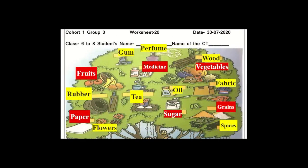Let's check them. Starting with the left side: first, here is the flower, paper, rubber, fruit, gum, perfume, medicines, tea, sugar, oil, spices, masala, grains, chowel or anaj, fabric, vegetables, wood. These are all the fill-in-the-blank answers. I hope all your answers are okay.